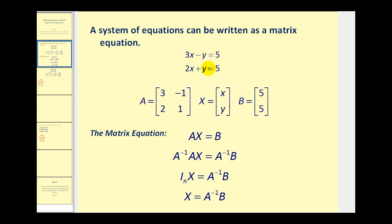First we'd set up a coefficient matrix for the variable terms, so the first row of matrix A would be 3, negative 1, and the second row would be 2 and positive 1. Next we'll let X represent the variable matrix. This system is in terms of X and Y, and then lastly we have the constant matrix which comes from the constants of each of the two equations. So the matrix equation would be A times X equals B.